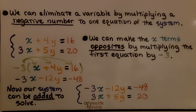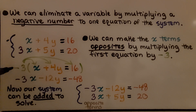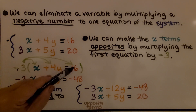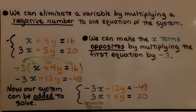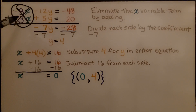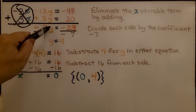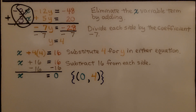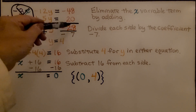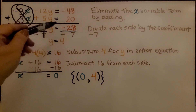We can also eliminate a variable by multiplying a negative number to one equation of the system. We can make the x terms opposites by multiplying the first equation by negative 3: negative 3 times x is negative 3x, negative 3 times positive 4y is negative 12y, and negative 3 times 16 is negative 48. Now we add the system: negative 3x plus 3x makes a zero pair, eliminating x. Negative 12y plus 5y gives negative 7y, and negative 48 plus 20 is negative 28. We divide each side by negative 7: negative 28 divided by negative 7 is positive 4, so y equals 4.